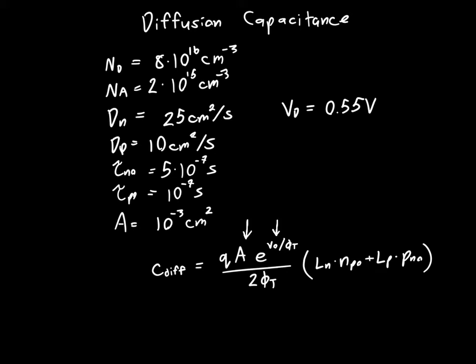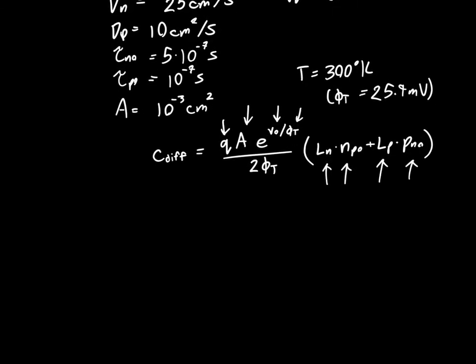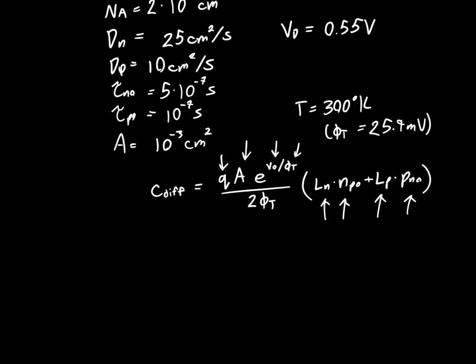Okay so we know most of the quantities in this equation. We know A, we know V naught, we know phi T. Oh by the way we're going to say that the temperature is 300 Kelvin. So phi T is 25.9 millivolts approximately. So we know phi T, we know Q. The things that we don't immediately know are LN and NP naught, LP and PN naught. But those we can just relatively quickly calculate.